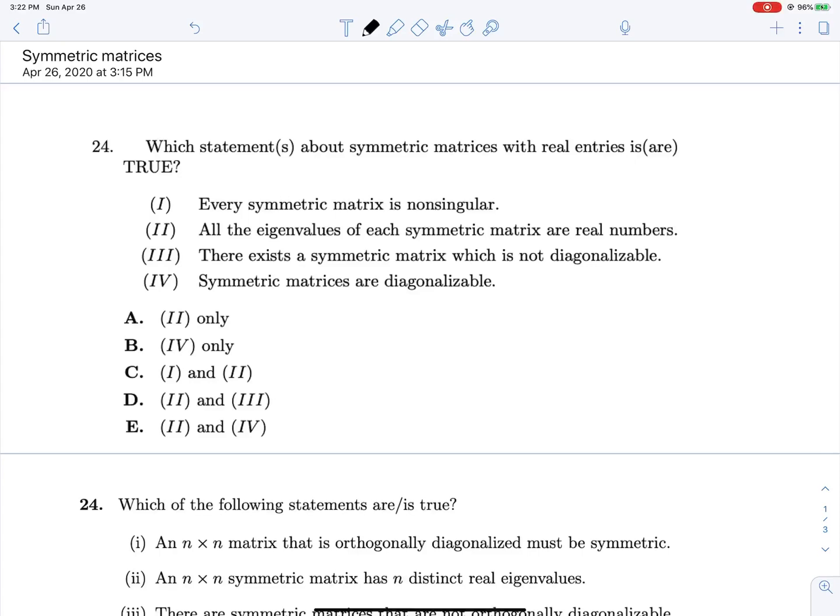So let's see if we can apply these to number 24. One, every symmetric matrix is non-singular. Well, the only property that we need to fulfill to be a symmetric matrix is to have a matrix that's equal to its transpose. So what is the transpose of 0, 0, 0, 0? That's 0, 0, 0, 0. It's a singular matrix that is symmetric, so this is false.